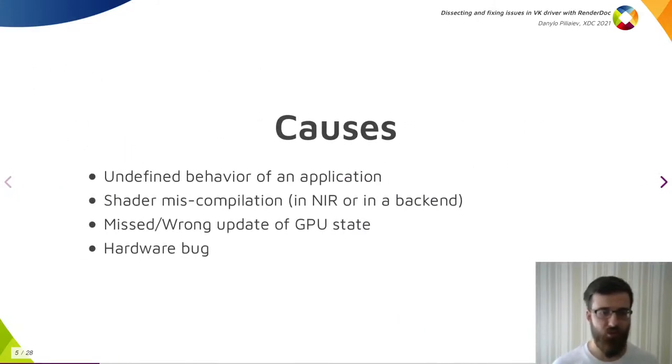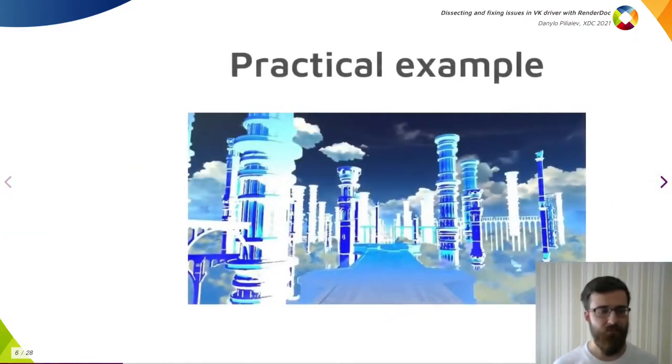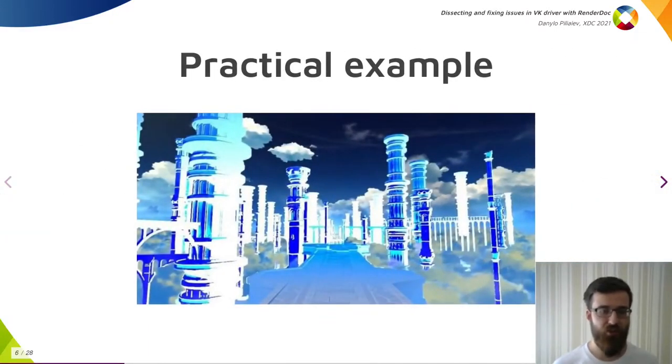The cause for the issues could also be categorized. Undefined behavior of an application is usually found with validation layers, or by inspecting a single frame, or across several frames. Shader miscompilation is also likely to be found by inspecting the frame. On the other hand, missed or wrong updates of the GPU state could be harder to find. And hardware bugs are all over the place. Later I'll talk about different tips to how to debug different issues. But now, let's take a look at the real-world issue I fixed in Turnip earlier this year.